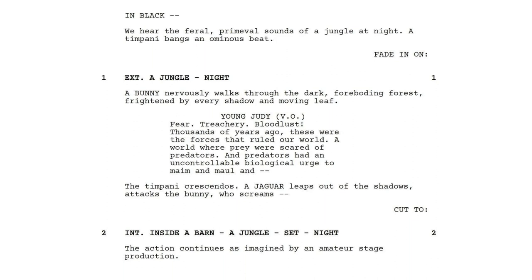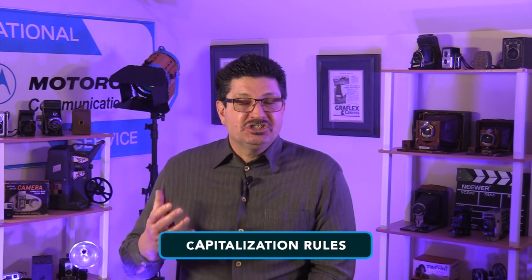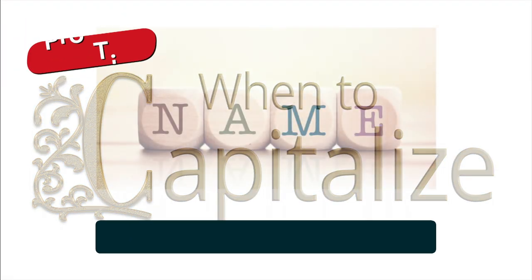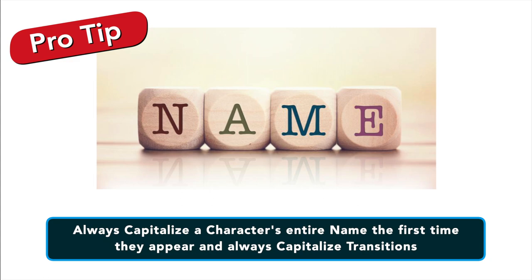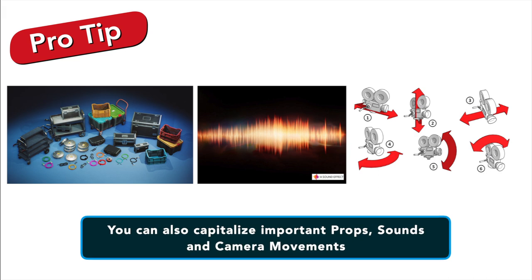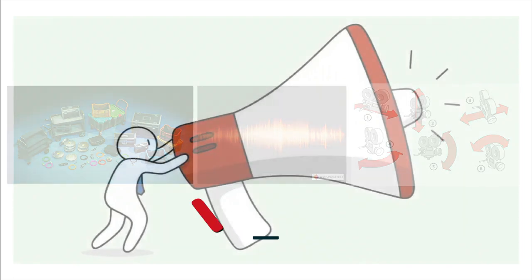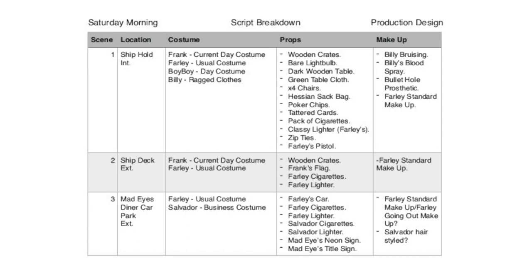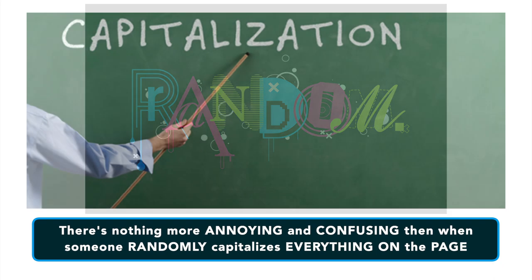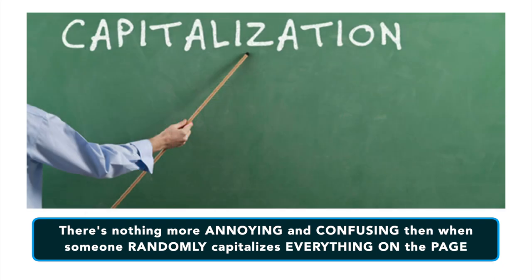The next thing to be aware of are capitalization rules. There are two hard and fast rules: always capitalize a character's name the first time they appear, and always capitalize transitions. Beyond that, you can also capitalize important props, sounds and camera movements — anything you want to call out for those doing the script breakdown. Just don't go overboard with it. There's nothing more annoying and confusing than when something randomly capitalizes everything on the page.